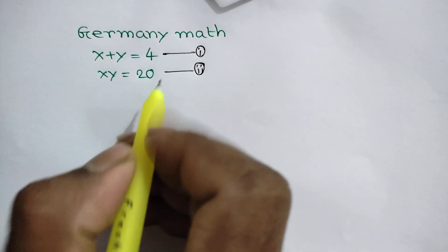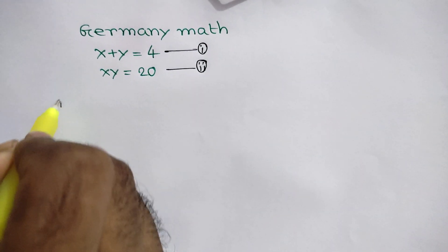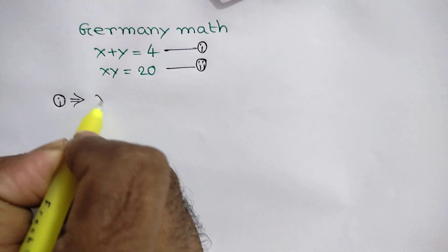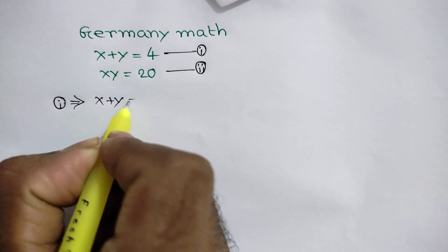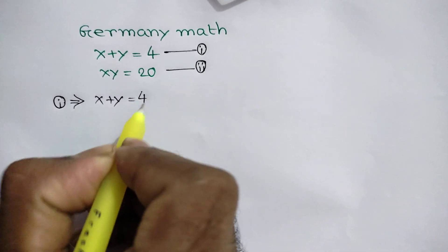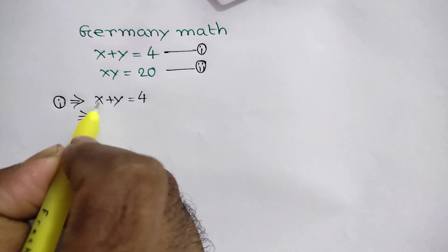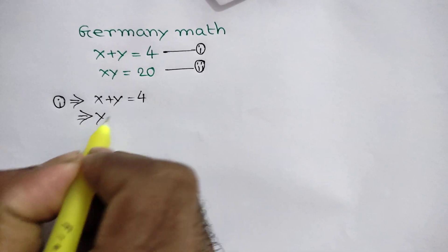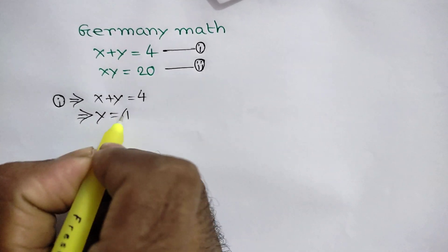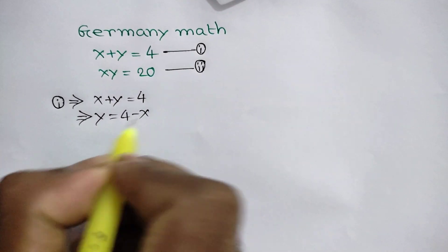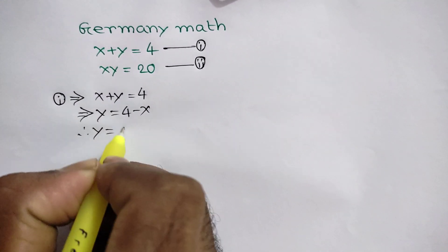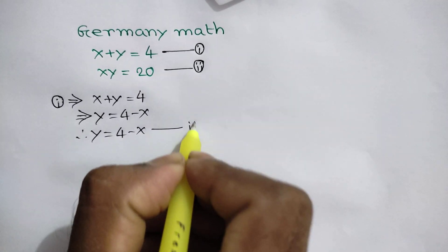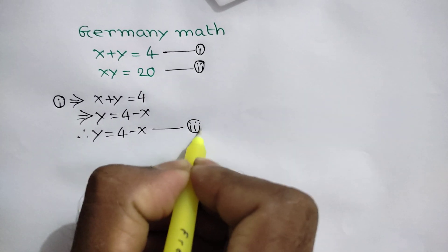Now, from equation number 1, we have x plus y is equal to 4. Taking x to the right side, we get y is equal to 4 minus x. This is called equation number 3.